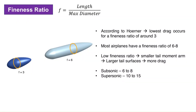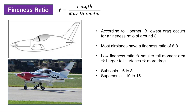Fineness ratio — it is the ratio of the fuselage length and its maximum diameter. Many books, including Horner's Fluid Dynamic Drag, point out that the lowest drag occurs at a fineness ratio of around 3. However, most airplanes have much higher values of this ratio, around 6 to 8. The best fineness ratio is around 3 if the design needs to have a large cross-sectional area and is not restricted by internal volume — in other words, if the fuselage length can be made as short as needed.